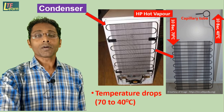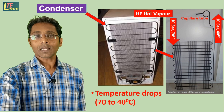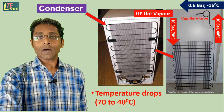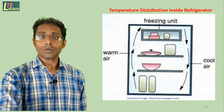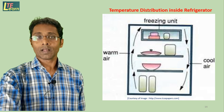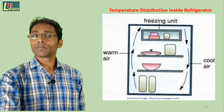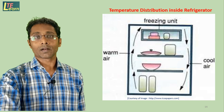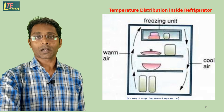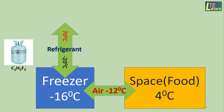This process continues, giving us very low temperature at the freezer section inside the refrigerator. Inside the refrigerator cabin, when air passes over the freezing unit it becomes cool. This cool air comes down, and while passing downward it receives energy from the foodstuff and becomes warm. Warm air always goes up. In this way, natural convection currents of air take place inside the refrigerator, maintaining the temperature at various sections.